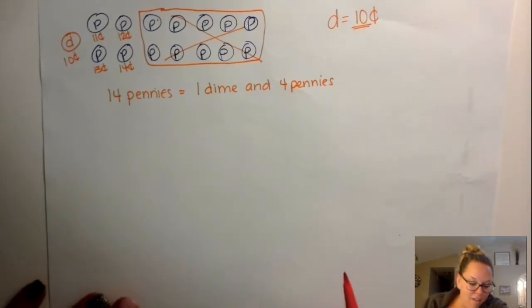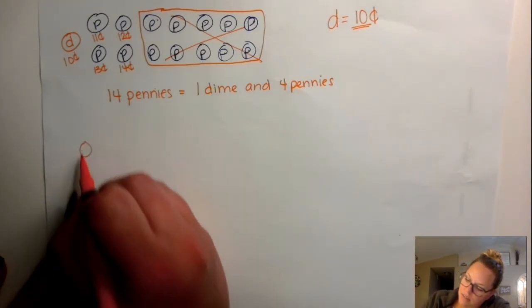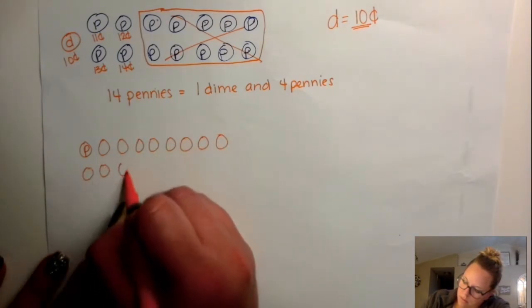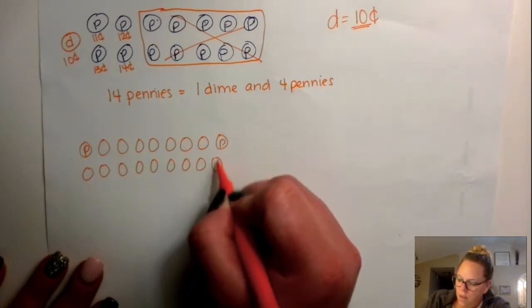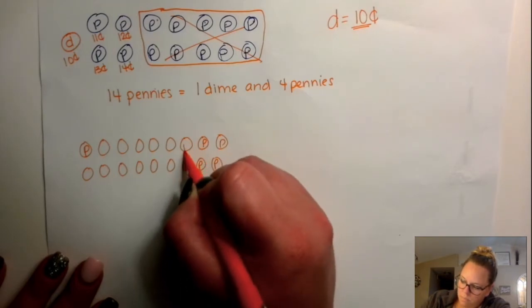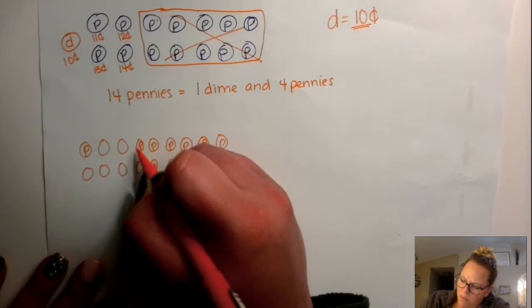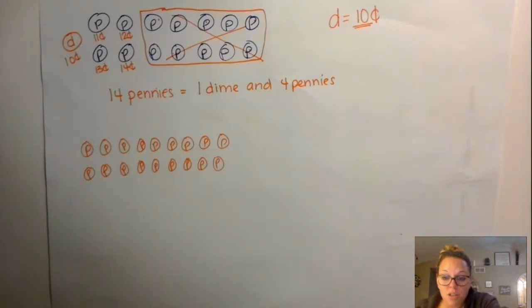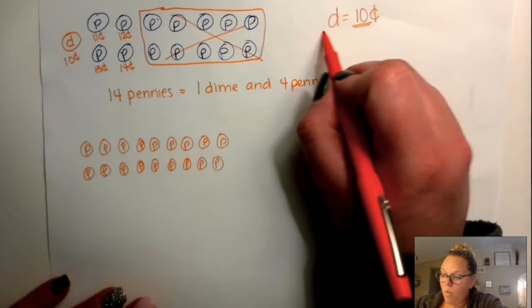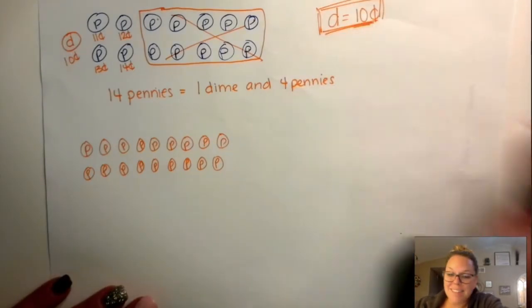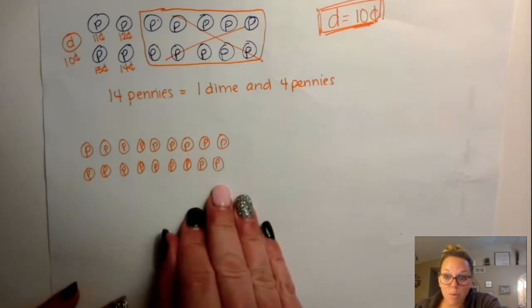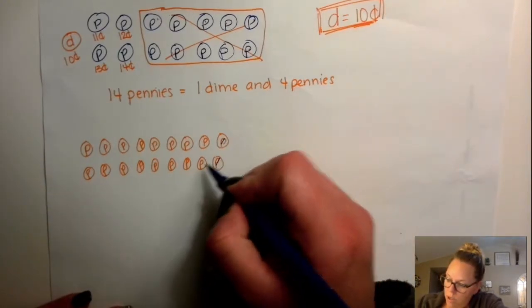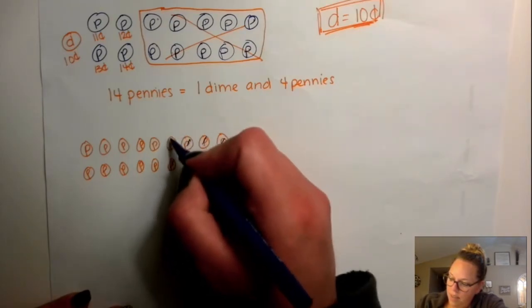What if I have 18 pennies? Now I have 18 pennies — that's a lot. I probably can't keep them all in my hand without dropping them. So I want to exchange some pennies for a dime. Remember that one dime is equal to 10 cents. So how many pennies can I take away to trade? I can take away 10 pennies: 1, 2, 3, 4, 5, 6, 7, 8, 9, 10.